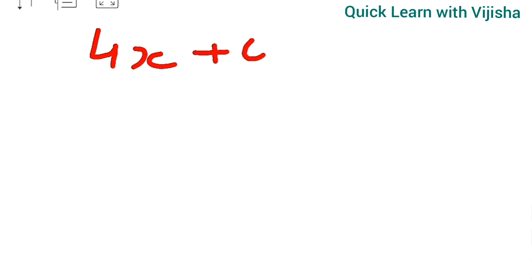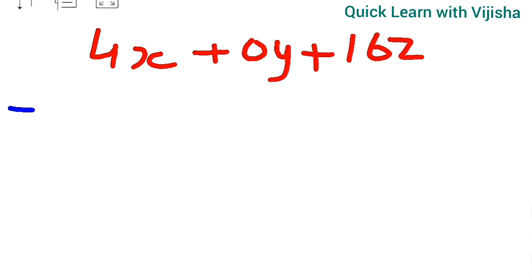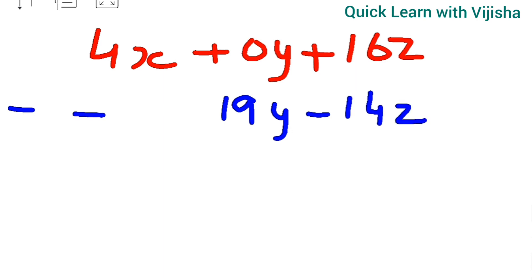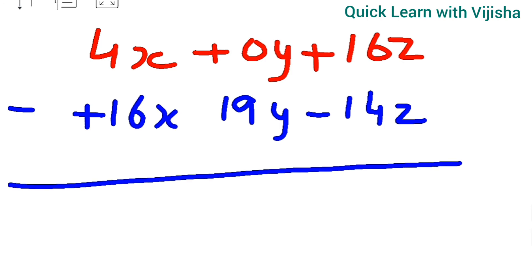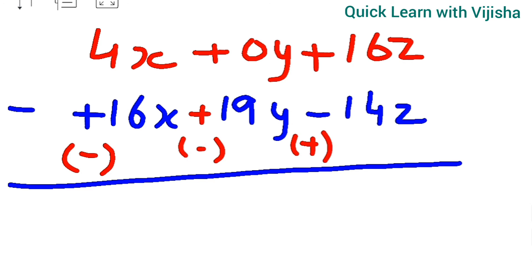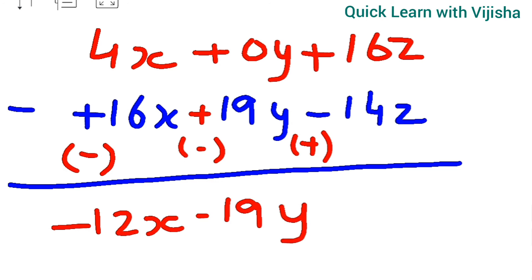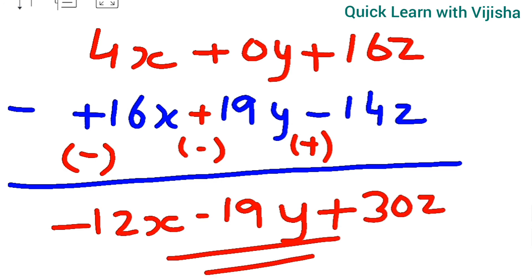For the vertical method of the fifth question, there is no y term in the first expression, so we write 4x plus 0y plus 16z. The second expression is minus 19y minus 14z plus 16x, aligned under respective terms. Changing signs: plus 16x becomes minus 16x, minus 14z becomes plus 14z. So 4 minus 16 gives minus 12x, minus 19 plus 0 gives minus 19y, and plus 16 plus 14 gives plus 30z.